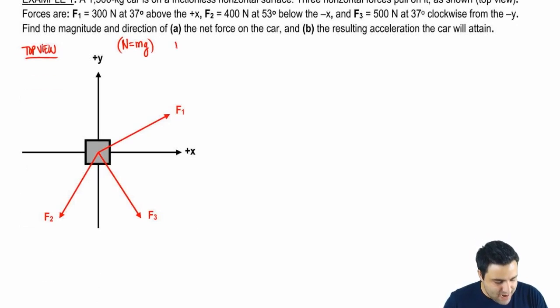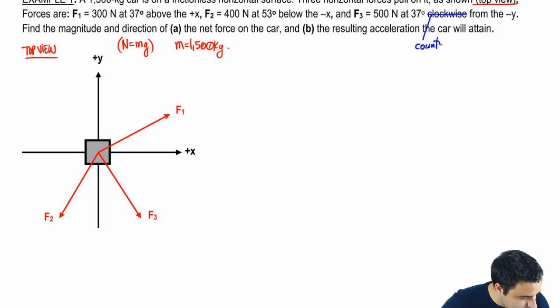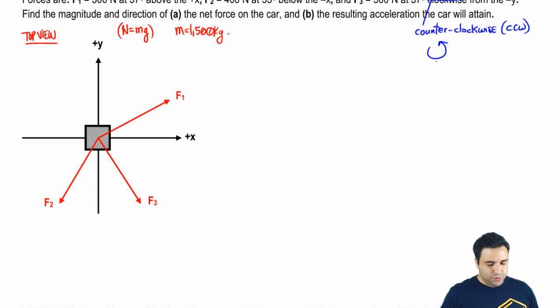So let's see. Here I have a mass of 1,500 kilograms on a frictionless horizontal surface, three forces pull on it, as shown, top view, and then I tell you what the forces are and what all the angles are. I'm going to put these numbers in here. I just want to point out that I made a small mistake here. This is supposed to be actually counterclockwise, ccw. So counterclockwise goes like this. So once we get to f3, I'll show you what that looks like.